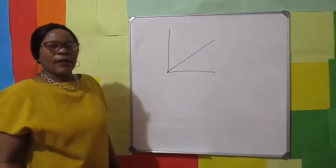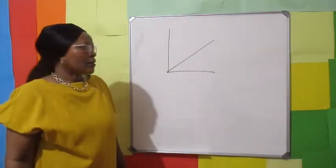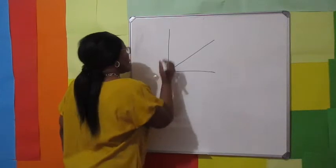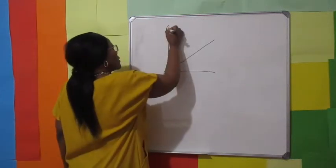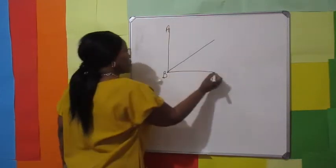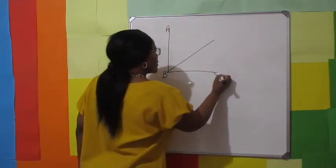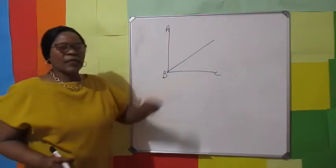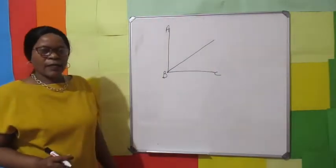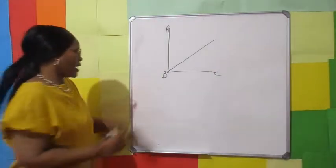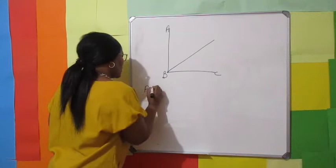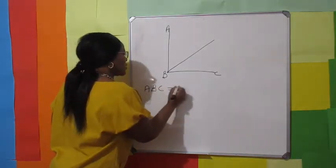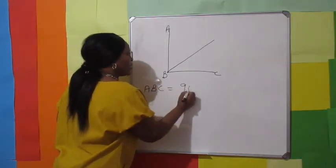Let's name another angle. Let's say B, A, C — angle BAC is equal to 90 degrees.